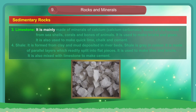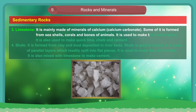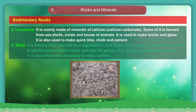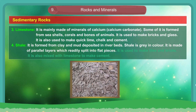3. Limestone. It is mainly made of minerals of calcium — calcium carbonate. Some of it is formed from seashells, corals and bones of animals. It is used to make bricks. It is also used to make quicklime, chalk and cement. 4. Shale. It is formed from clay and mud deposited in river beds. Shale is gray in color. It is made of parallel layers which readily split into flat pieces. It is used to make tiles and bricks. It is also mixed with limestone to make cement.